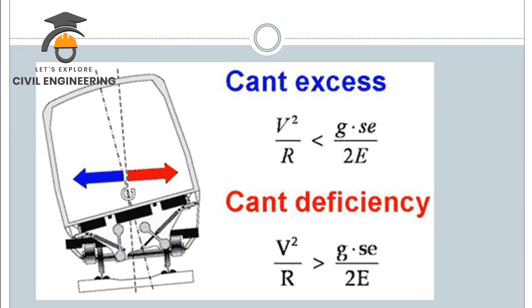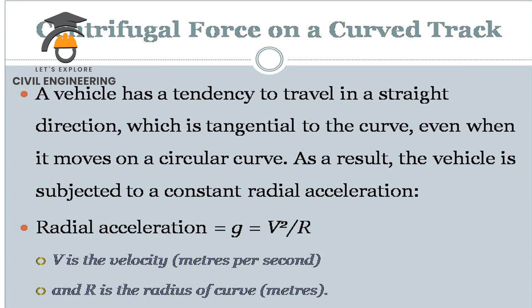We can also see cant excess. V² by R is the centrifugal force expression. The centrifugal force equals G·SE by 2 at equilibrium. If V² by R is less than G·SE by 2, that is cant excess — the centrifugal force is reversed. If V² by R is greater than G·SE by 2E, that is cant deficiency. The super elevation is expressed as E.